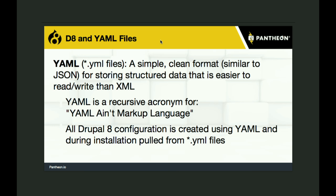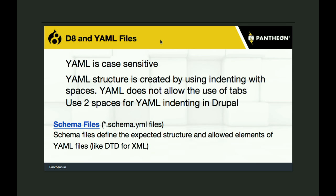YAML files — all the configuration that Drupal used to hide in the database now gets put into YAML files. YAML is a recursive acronym for YAML Ain't Markup Language, and basically it looks like JSON. When you make a module and want default settings for your module's admin page, you'll have those in a YAML file. When you enable your module, Drupal reads those default settings and puts them in the database for you. It's case sensitive, you should use two spaces for indenting, and you should not use tabs.